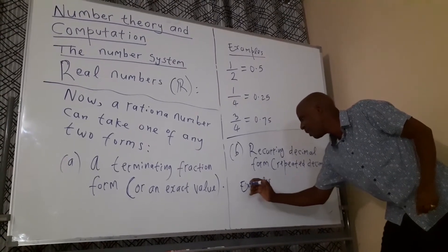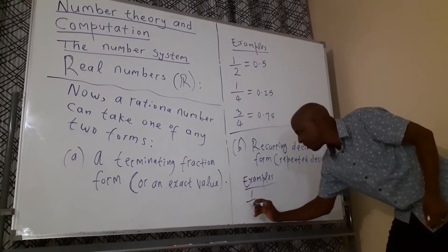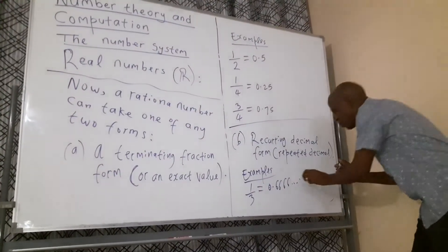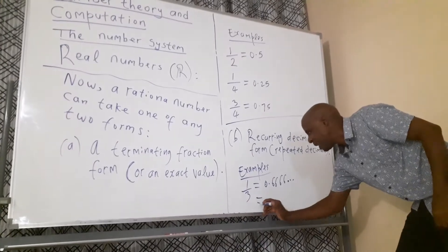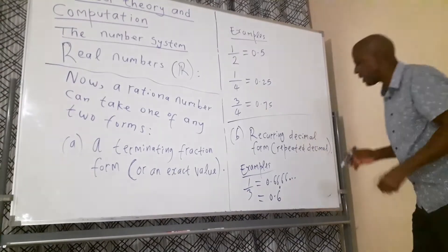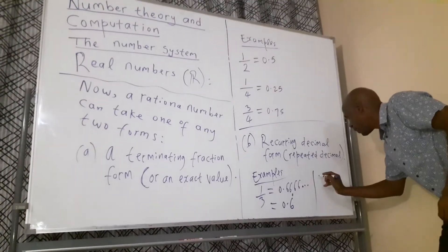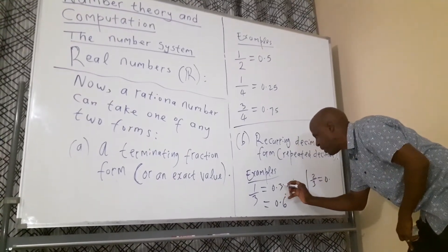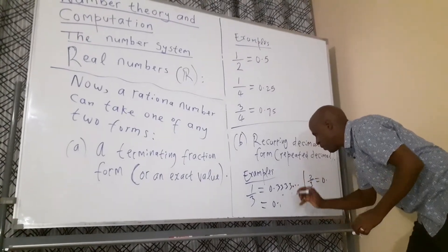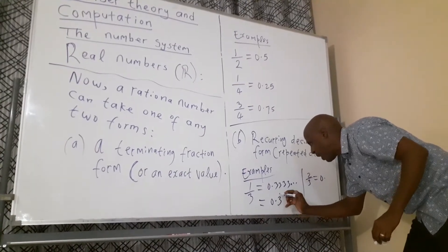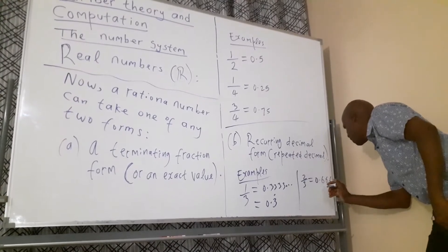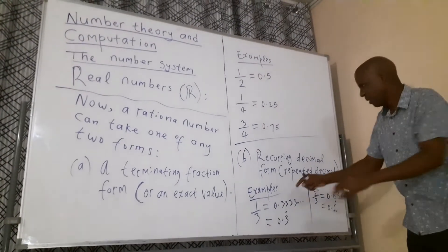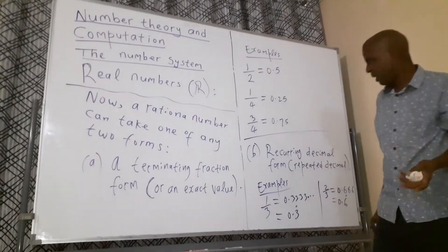As the name suggests, recurring means repeating. For example, one third equals 0.3333 and so on, which we write as 0.3 with a dot above it to show it repeats. Two thirds equals 0.6666 and so on, written as 0.6 with a dot above it. The dot above the digit shows that it repeats itself — these are called recurring decimals.